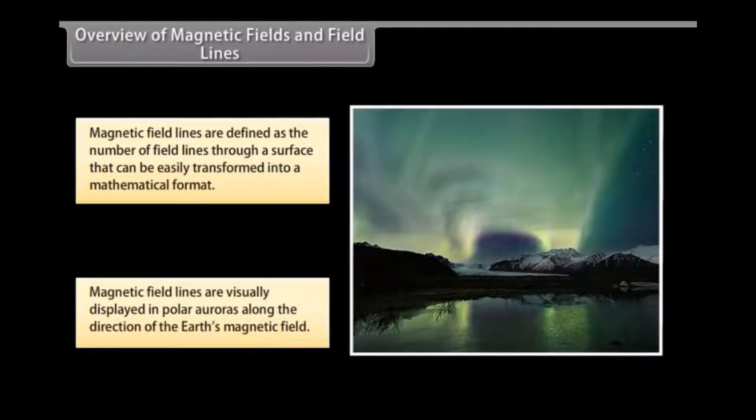Magnetic field lines are visually displayed in polar auroras where visible streaks of lines are created along the direction of Earth's magnetic field.